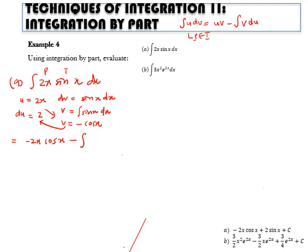So v du = −2 cos x dx. We now integrate: −2x cos x minus the integral of −2 cos x dx, which becomes −2x cos x + 2 sin x + C. Remember, after integrating there's no more constant inside — just add C at the end.